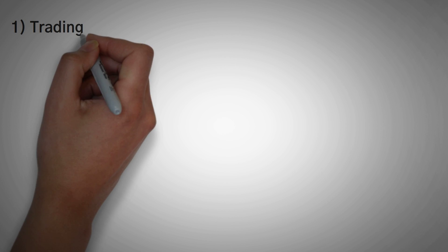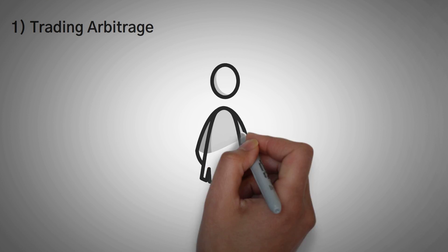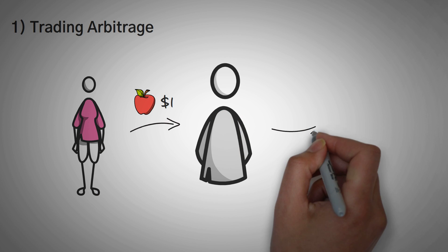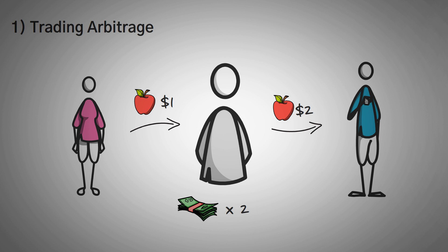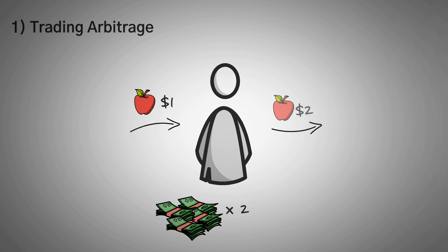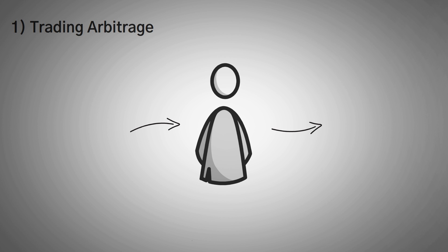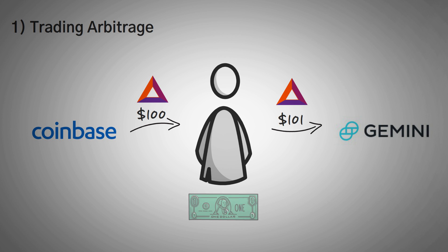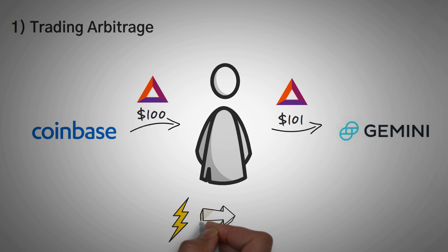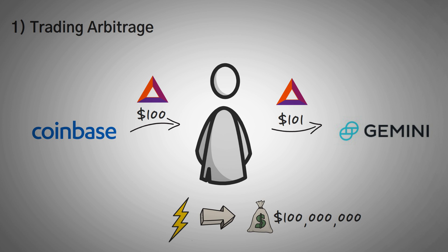Flash loan purpose number 1: Trading Arbitrage. Imagine a situation where you could buy an apple for a dollar from your mom and then sell that apple to your dad for $2. You could easily double your money. This is exactly what trading arbitrage is. In the case of cryptocurrency, you might be able to buy the Basic Attention Token for $100 at Coinbase and then turn around and sell it to Gemini for $101, making a single dollar of profit. With flash loans, you can borrow $100 million to do this trade over and over again.